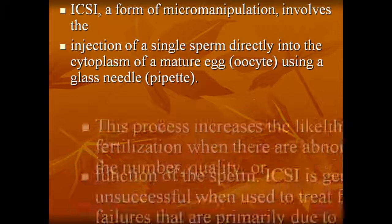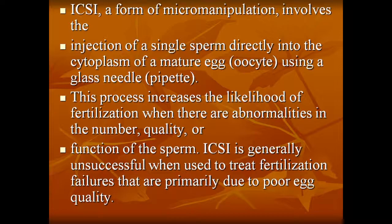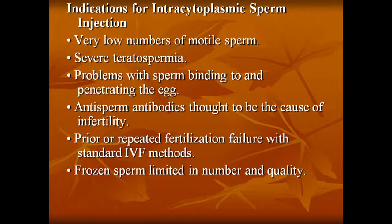This process increases the likelihood of fertilization when there are abnormalities in the number, quality, or function of the sperm. ICSI is generally unsuccessful when fertilization failure is primarily due to poor egg quality. Indications for ICSI include very low number of motile sperm, severe teratospermia, problems with sperm binding and penetrating the egg, anti-sperm antibodies thought to be causing infertility, prior or repeated fertilization failure with standard IVF methods, and frozen sperm limited in number and quality.